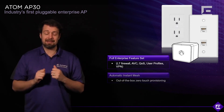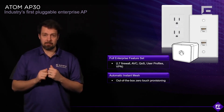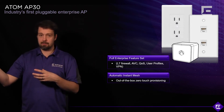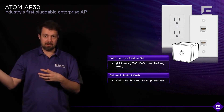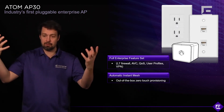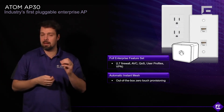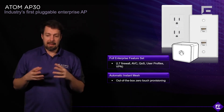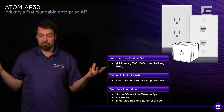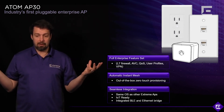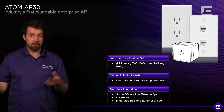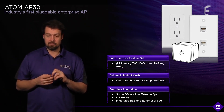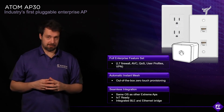It has an automatic instant mesh capability, so when you take it out of the box, if you're already running an Extreme Cloud wireless network, it will automatically mesh to your environment — all you have to do is put in the serial number into the cloud. It also provides seamless integration for IoT devices because it has a BLE radio. So it's a very versatile little device.